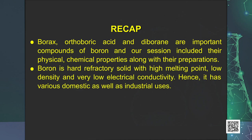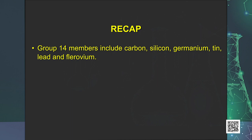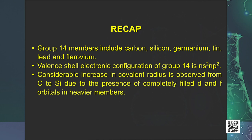Boron is a hard refractory solid with high melting point, low density and very low electrical conductivity, hence it has various domestic as well as industrial uses. Aluminium is a silvery-white metal with high tensile strength and high thermal and electrical conductivity; it also forms alloys and has various industrial and everyday uses. Group 14 members include carbon, silicon, germanium, tin, lead and flerovium. The valence shell electronic configuration of group 14 is ns²np², and a considerable increase in covalent radius is observed from carbon to silicon.